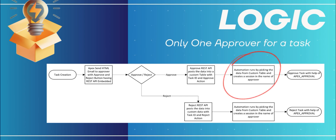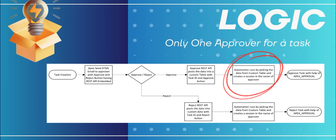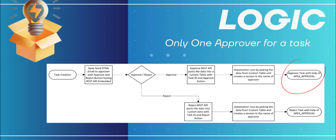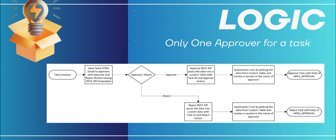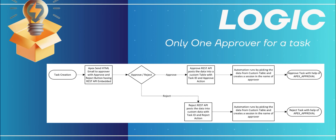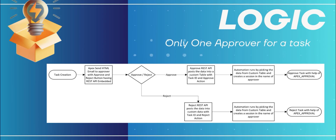When the user clicks one, a record is inserted into a custom table. This record includes the task ID and the action taken — either approve or reject. Once the data is captured, an automation process picks it up, figures out who the approver is, and programmatically creates a session under their name using the APEX Approval package. It then performs the approval or rejection automatically, as if the approver did it themselves in the app. And just like that, we've enabled email-based task approval in Oracle APEX. In this session we'll break this down step by step — REST API, email template, custom table structure, automation logic — everything you need to implement this on your own.